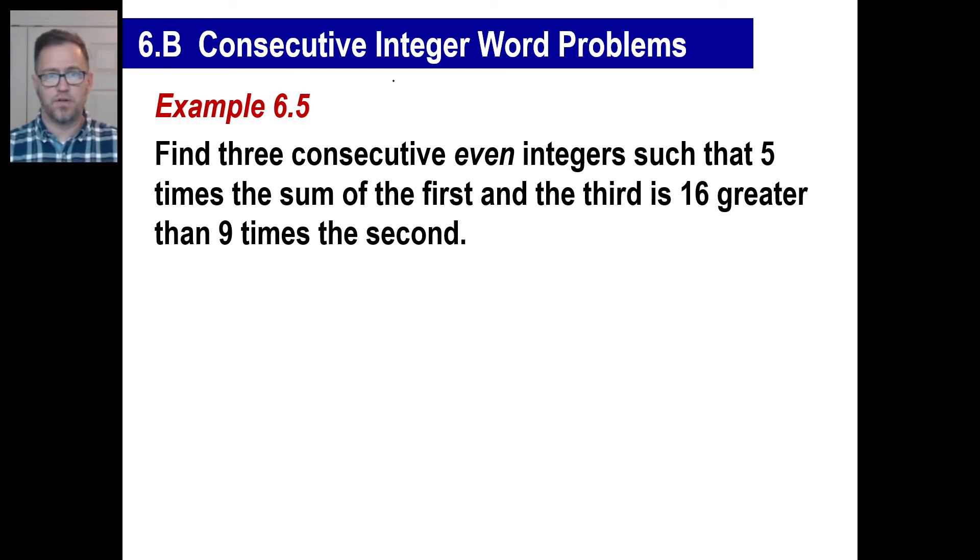Anything even or odd consecutive, there's always 2 between them. So let's figure them out. Three consecutive even integers. Well, there's the first one. We don't know what it is. So what's the second one going to be? X plus 2, right? The third one, three consecutive, will be X plus 4, right? There you go.